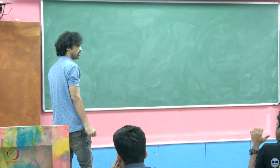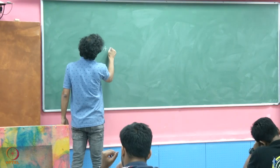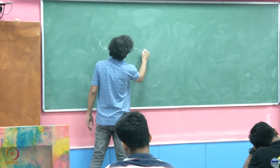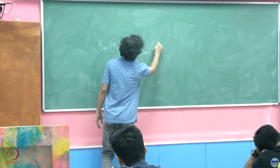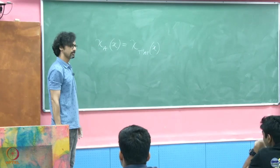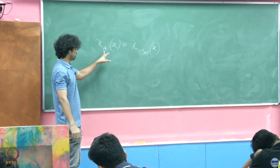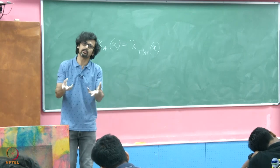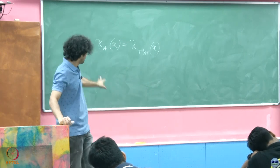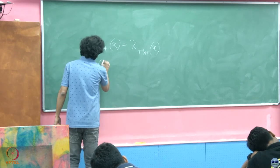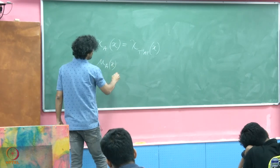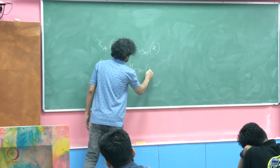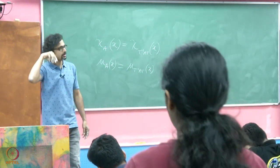Next we see a straightforward result: for χ_A(x), we have χ_A(x) = χ_{T⁻¹AT}(x), meaning the characteristic polynomial is invariant under a change of basis. We used the property that the determinant of a product equals the product of determinants to prove this.